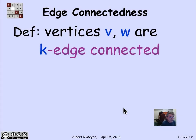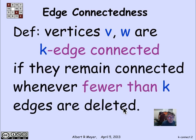So connectivity is more than just an all or nothing affair. We can talk about how connected a graph is. So let's begin with two vertices. Two vertices are said to be k edge connected if they remain connected if you remove fewer than k edges from the graph.